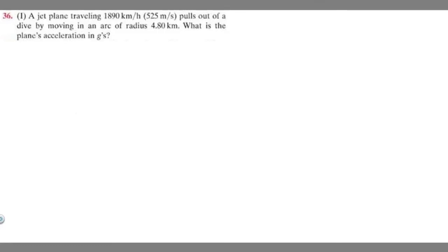In this problem, we're told a jet plane traveling 1,890 kilometers per hour, or 525 meters per second, pulls out of a dive by moving in an arc of radius 4.8 kilometers. What is the plane's acceleration in Gs?